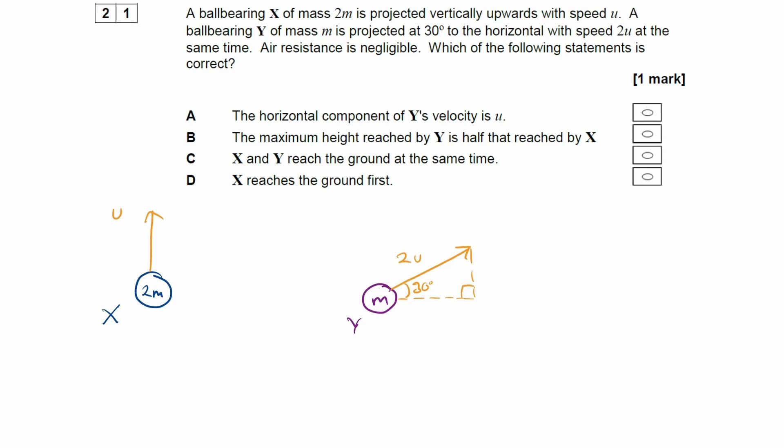We're told that air resistance is negligible, and we're asked which of the following statements is correct. The horizontal component of Y's velocity is u. Let's work that out.